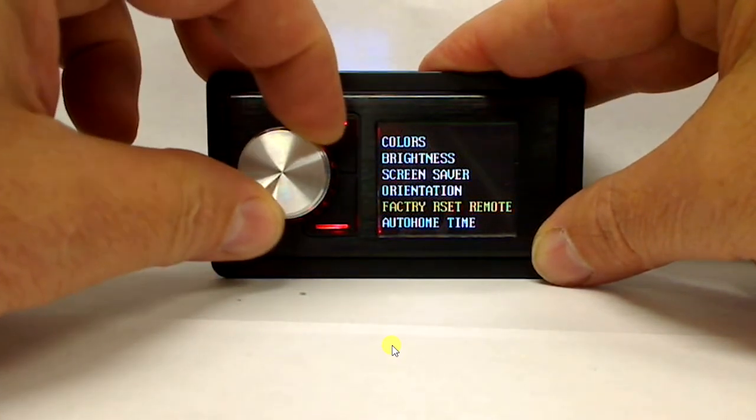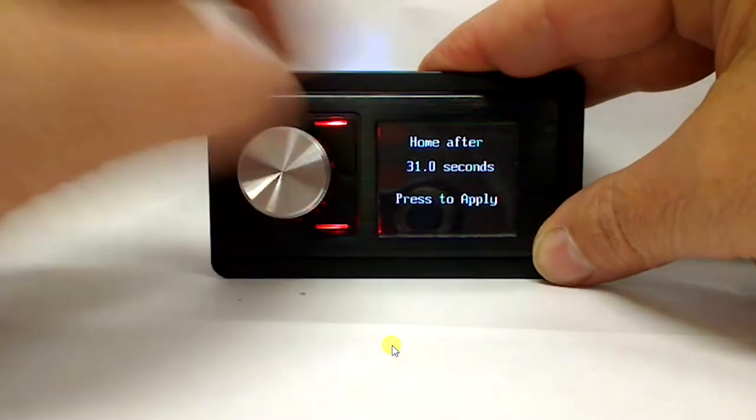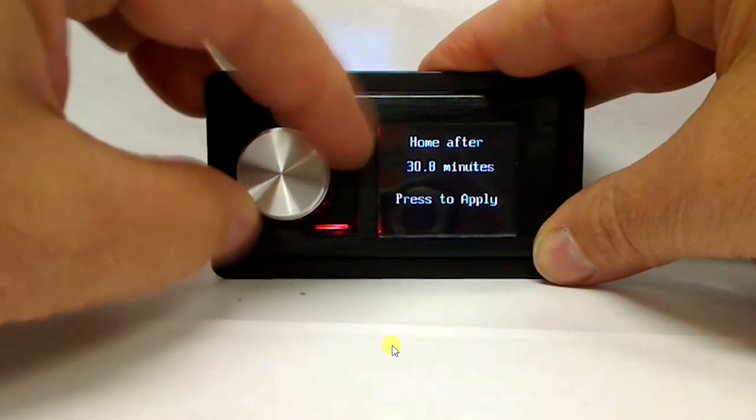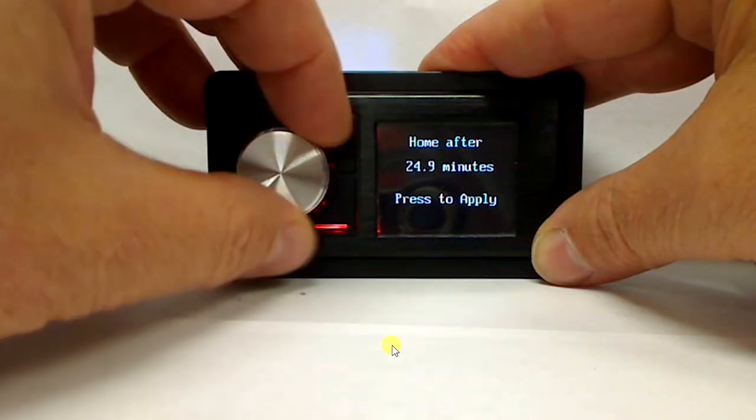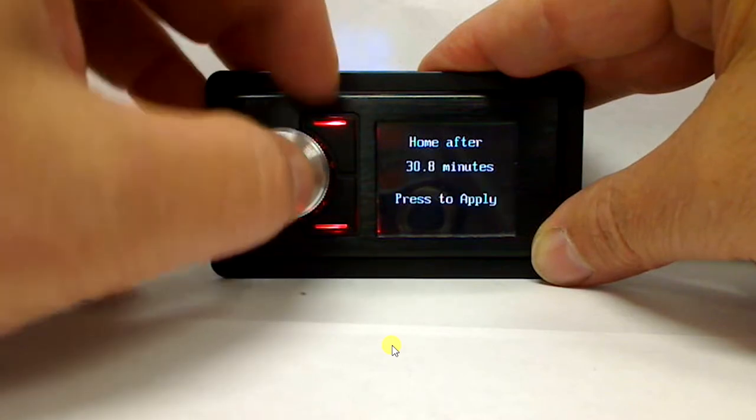Now auto home time—remember when we started we had that scrolling screen. If you click on it it'll say home after 31 seconds. Well I want to go ahead and increase that. Actually auto home takes you back to the home screen regardless where you are in the menu. But we're going to say we're going to set this for 30.8 seconds. That's fine.